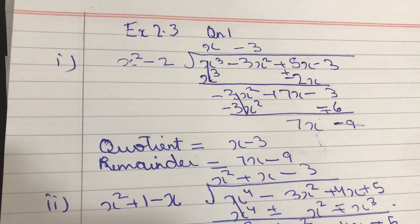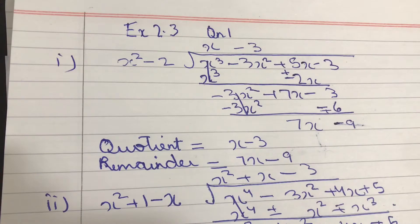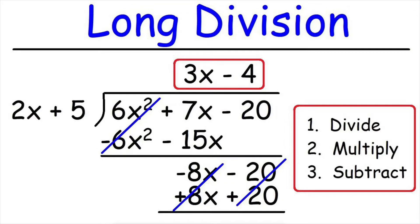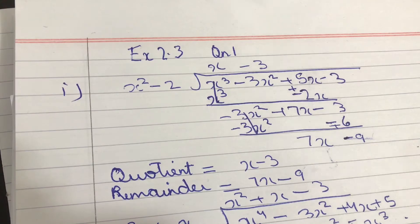Hey everyone, in this video we will be doing question number 1 from exercise 2.3 class 10 maths. In this exercise we have to divide the polynomial p of x by the polynomial g of x and then find out the quotient and remainder. There are three sub parts and let me tell you how to do this very easily. We can use a similar way in which we divide normal integers.